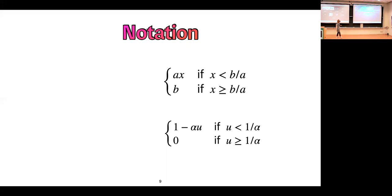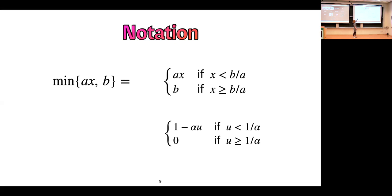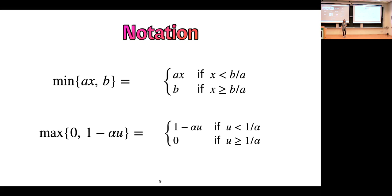For model formulation, I'll use two notations for notational simplicity involving two piecewise continuous functions. The first function takes the minimum value between ax and b: if ax < b (equivalently x < b/a), we take ax; if ax > b, we take b. The second function uses max, taking the maximum value between the two. Whenever you see these notations, remember we have piecewise continuous functions.